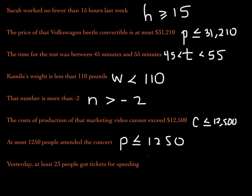Yesterday, at least 23 people got speeding tickets. Using S for speeding tickets — at least 23 people got tickets. So either 23 people got tickets, or 24, or 25, or 30, or 50 — right? At the very minimum, 23 people got a speeding ticket. So we're going to say S is greater than or equal to 23.